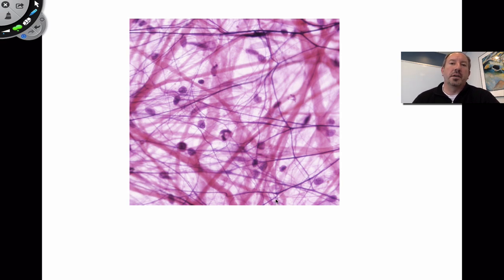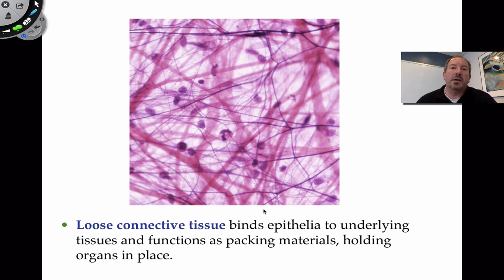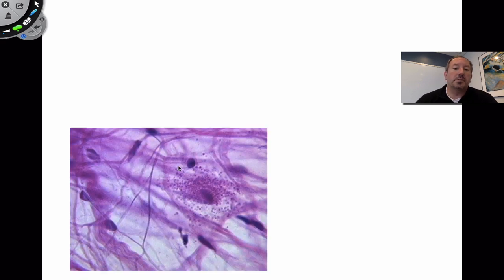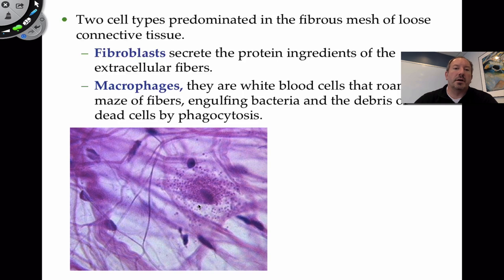Another picture of loose connective tissue — you have to look at many examples to learn how to identify it. The goal is to not confuse it with another tissue type. It helps to bind the epithelial tissue that is right above it. Here's a white blood cell — a macrophage — cruising along in the tissue, eliminating any bacteria it encounters. The fibroblast cells are the ones secreting the protein in the matrix.